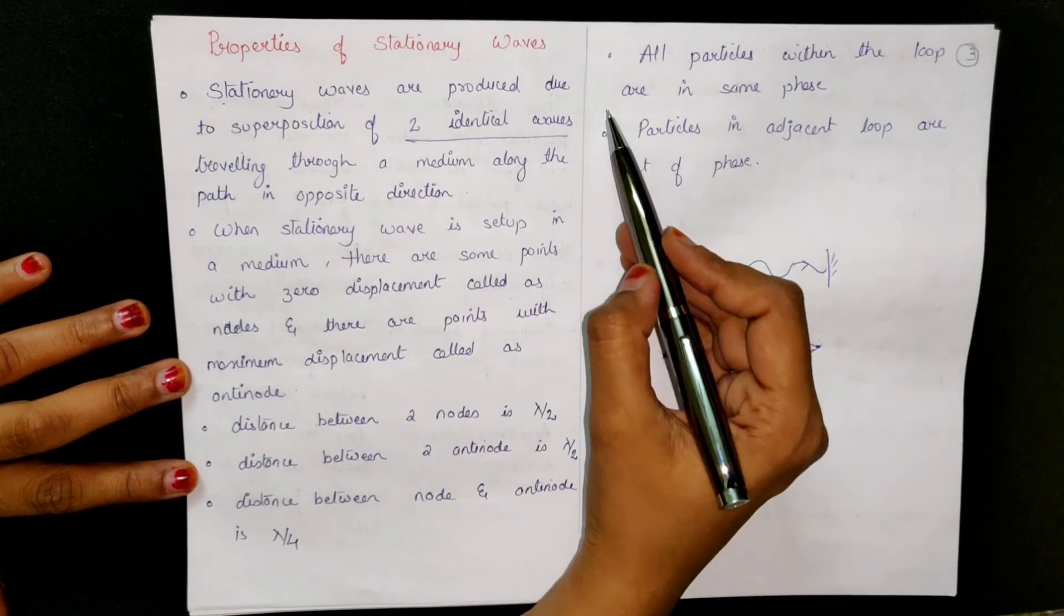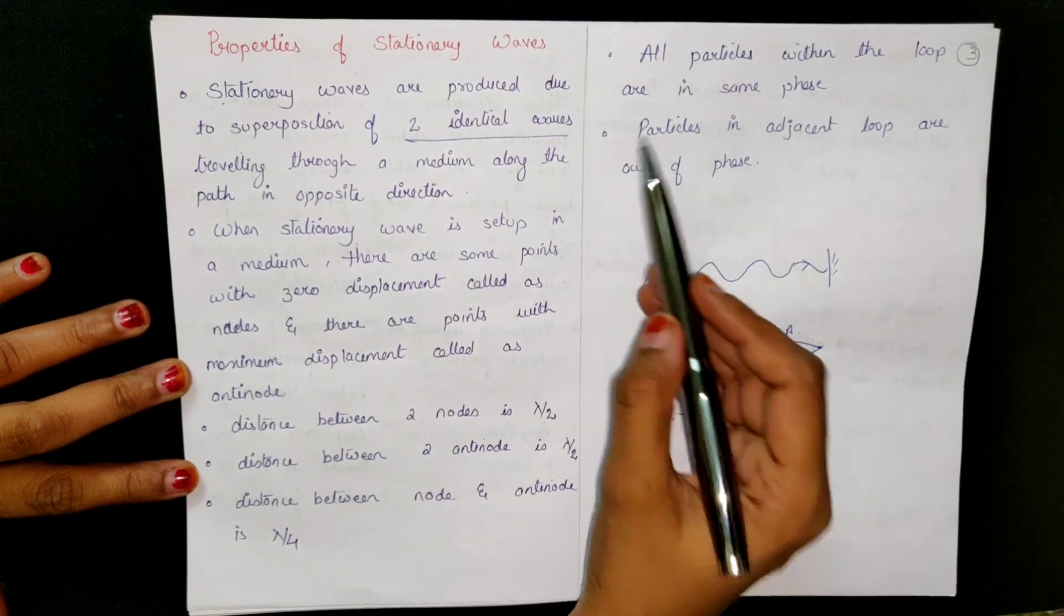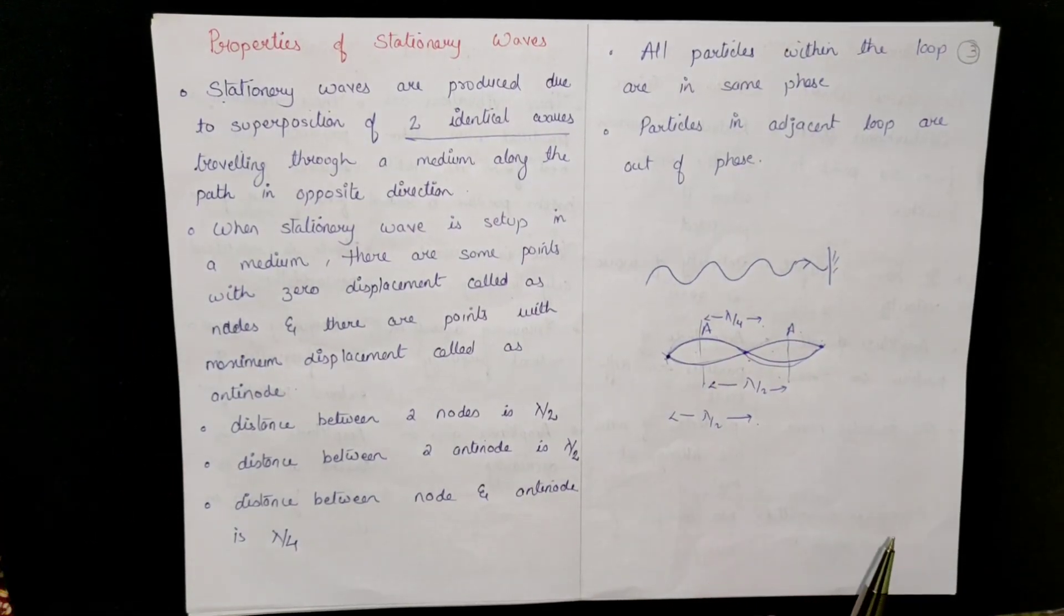All the particles within the loop are in the same phase and particles in adjacent loops are out of phase.